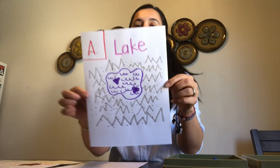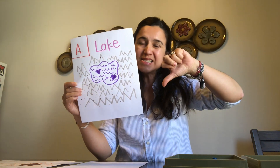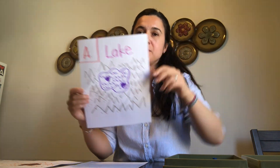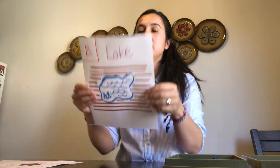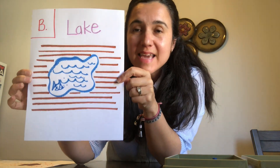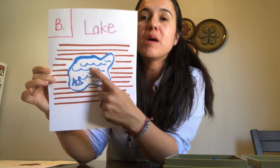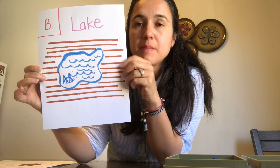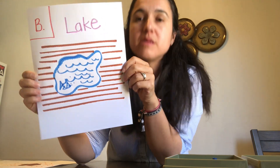Hmm, that's a hard question. So, let's see. If your answer is letter A — wrong, that's not the answer. The answer is letter B. A lake is a body of water surrounded by land. Next question.